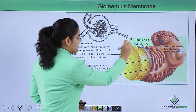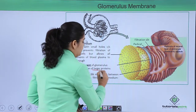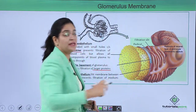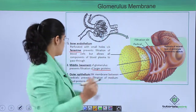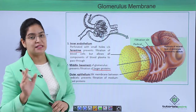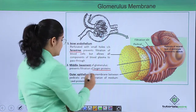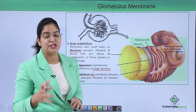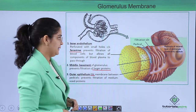The middle layer contains special cells that prevent filtration of larger proteins. The last layer, the outer epithelial layer, contains pedicel-like structures. Between these pedicels, slit membranes are present, which prevent medium-sized proteins from entering.